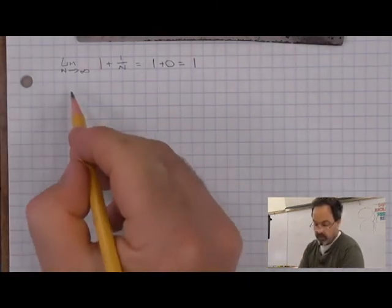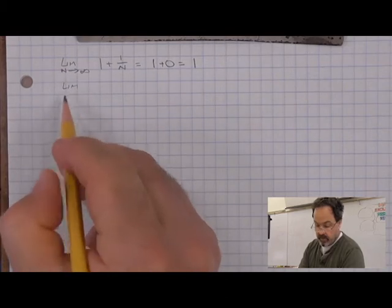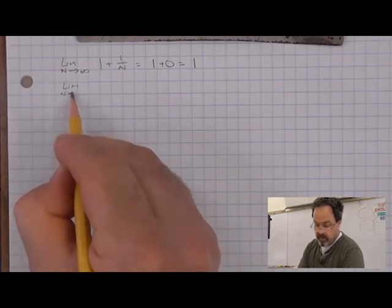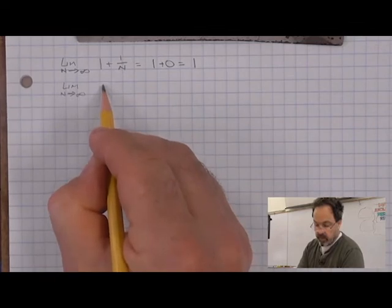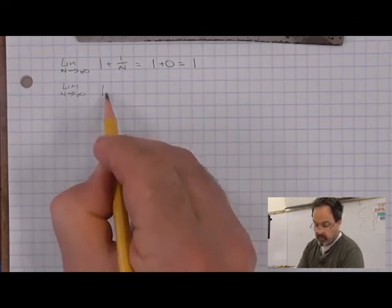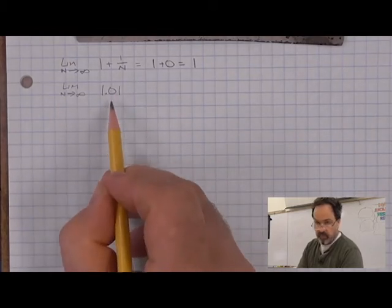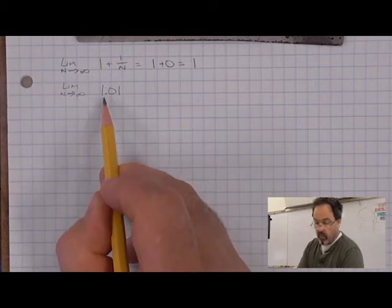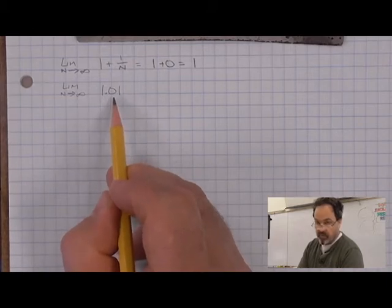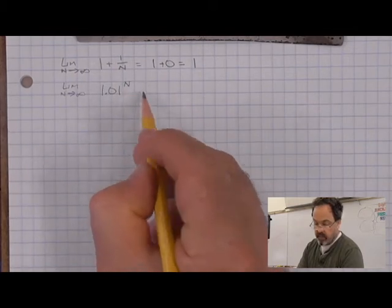Let's take a look at another infinite limit. As the limit as n goes to infinity of an exponential expression, we're going to choose the base to be something very small, but over 1. So 1.01 is just greater than 1.